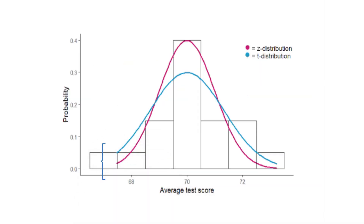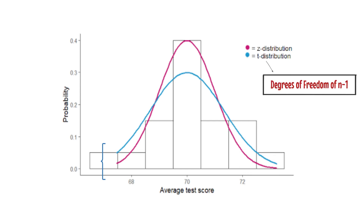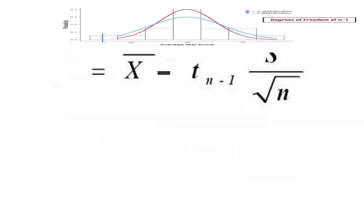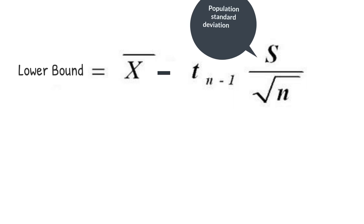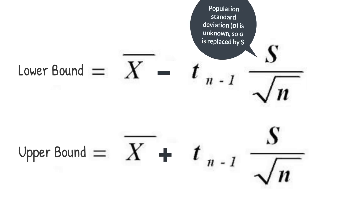The t-distribution has a fatter tail compared to the z-distribution. The t-distribution is completely characterized by one parameter: degrees of freedom, which is n minus 1. The lower bound of the confidence interval using a t-distribution is x-bar minus t (with n minus 1 degrees of freedom) times the standard error, and the upper bound is x-bar plus t (with n minus 1 degrees of freedom) times the standard error.